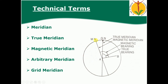When we measure the angle from the true meridian towards the survey line, that angle is called the true bearing. When measured from the magnetic meridian towards the survey line, it is called magnetic bearing. When measured from an arbitrary meridian, it is arbitrary bearing, and when measured from the grid meridian, it is a grid bearing.